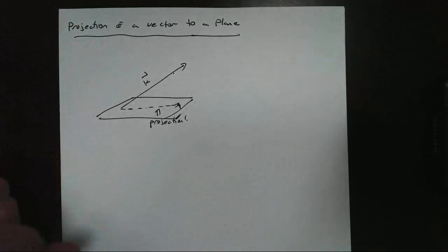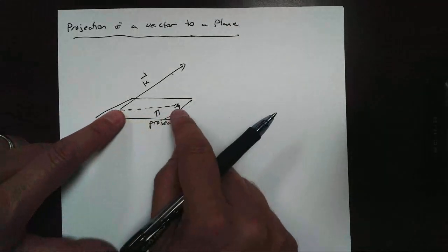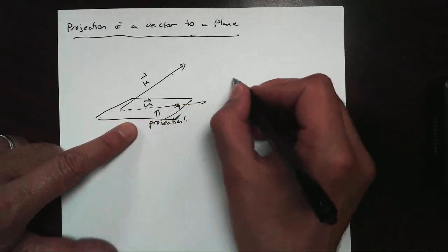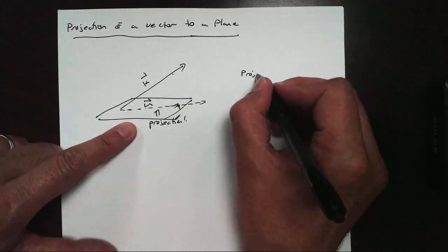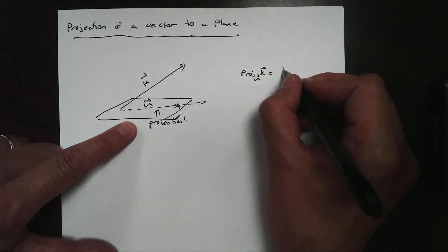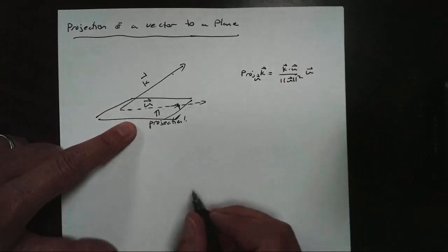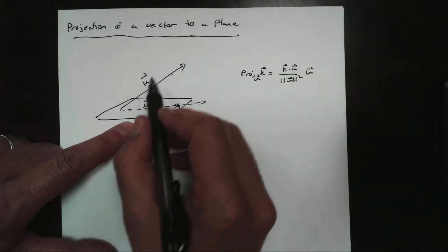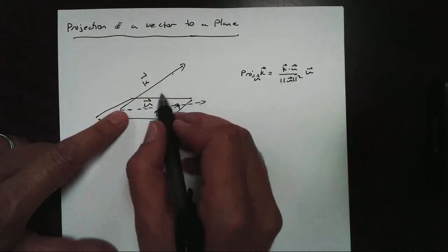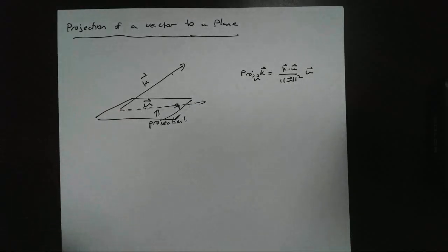Ideally what's going to happen is we would know what this line was. But we're talking about a plane this time, so we can't get it right away. If I call this vector U, we are really trying to find the projection of K onto U. We know that formula — we take the dot product of K dotted with U over the magnitude of U squared, times U. The problem is we don't know what U is. Earlier we could find it because we did the projection of a vector onto a line, but if we don't have that line, it gets a little more tricky.